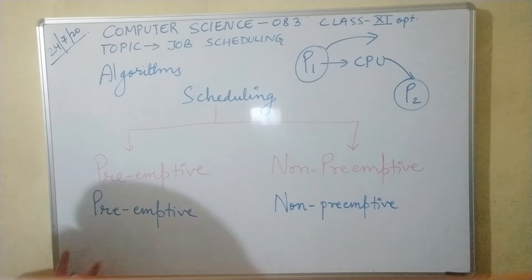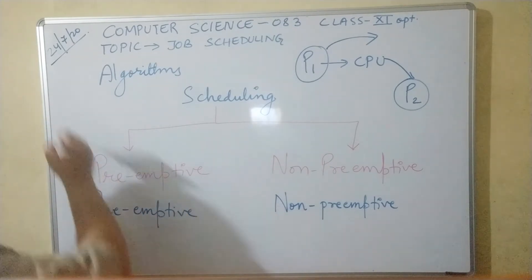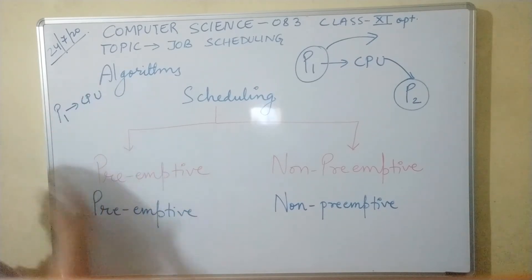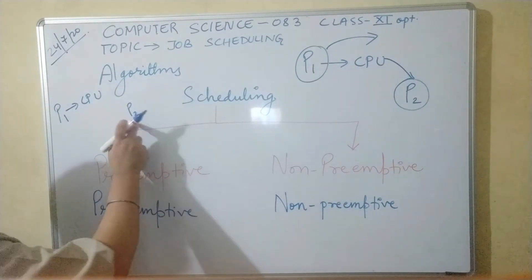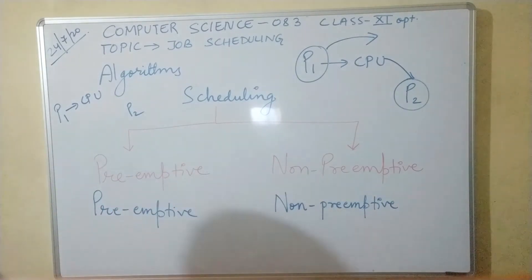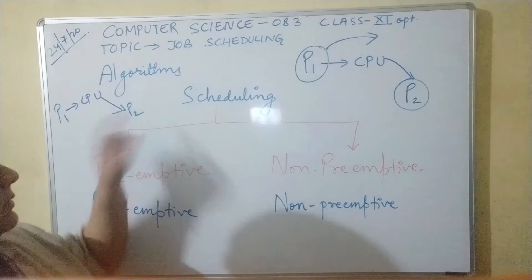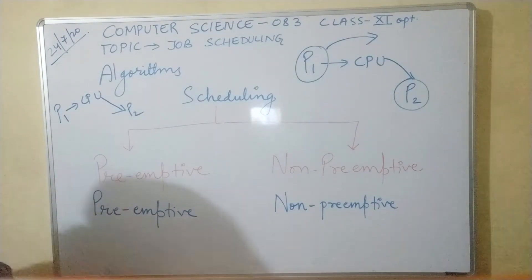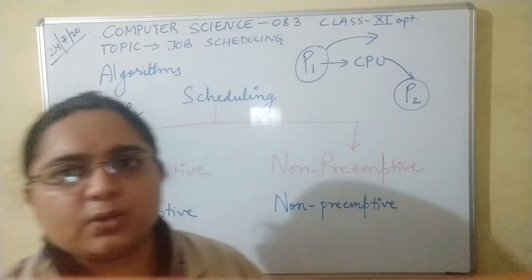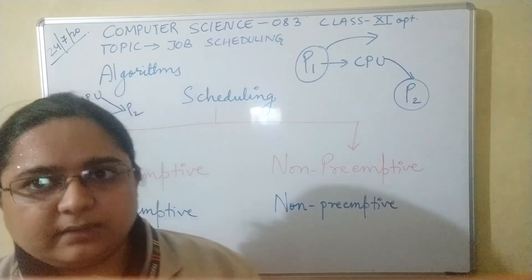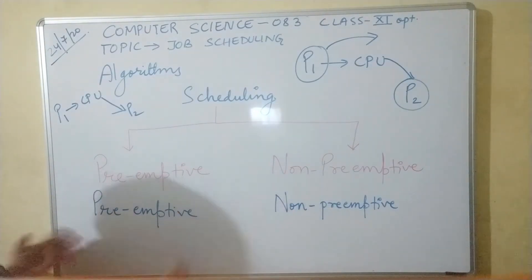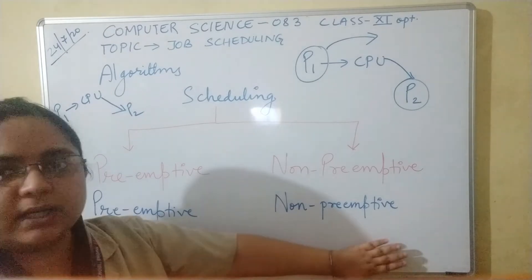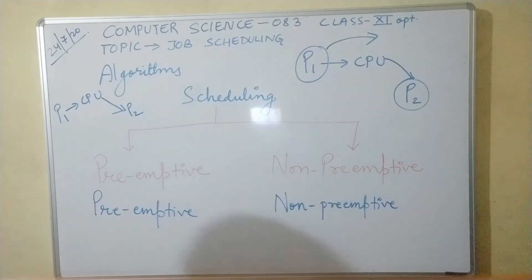In preemptive scheduling, the CPU is preempted. If process P1 is executing on the CPU and in the meantime P2 arrives in the ready queue with higher priority than P1, the CPU will stop executing P1 and move on to P2, starting execution of P2. So the CPU is interrupted in between and made to switch over to the next process. Some algorithms fall under preemptive scheduling and some under non-preemptive scheduling.